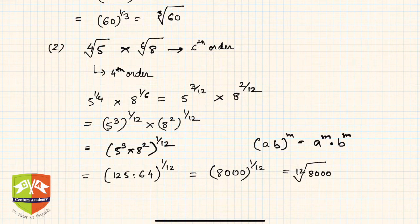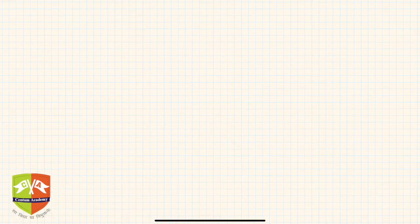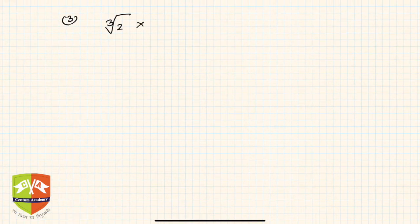That was multiplication of two surds of different order: convert them into the same order and then multiply easily using the laws of exponents. Now let us take another case — surds of different order but where the number underneath the root is the same. For example, the third root of two multiplied by the fifth root of two.